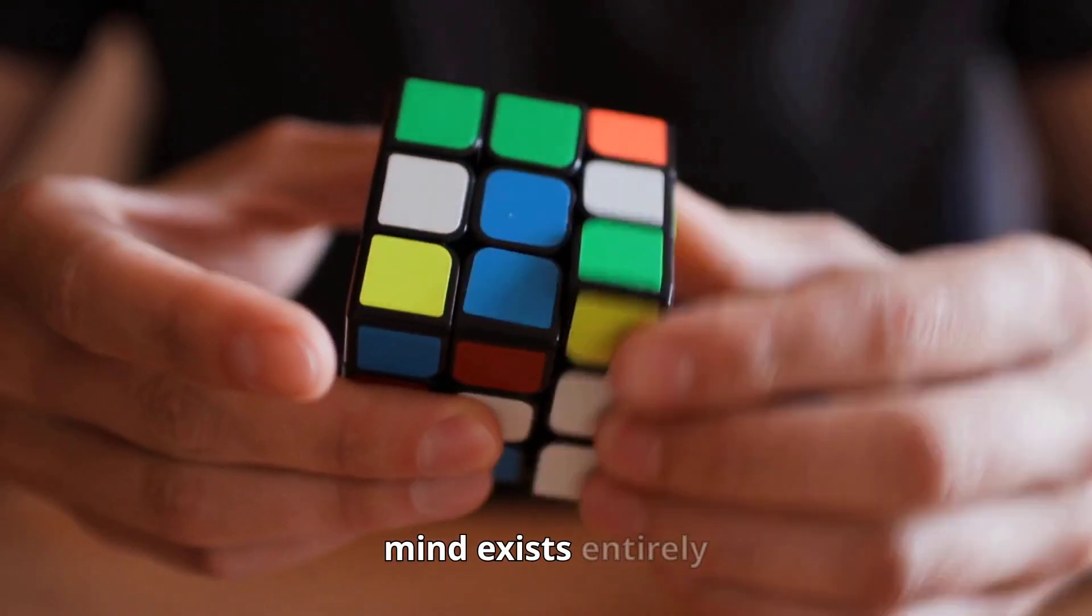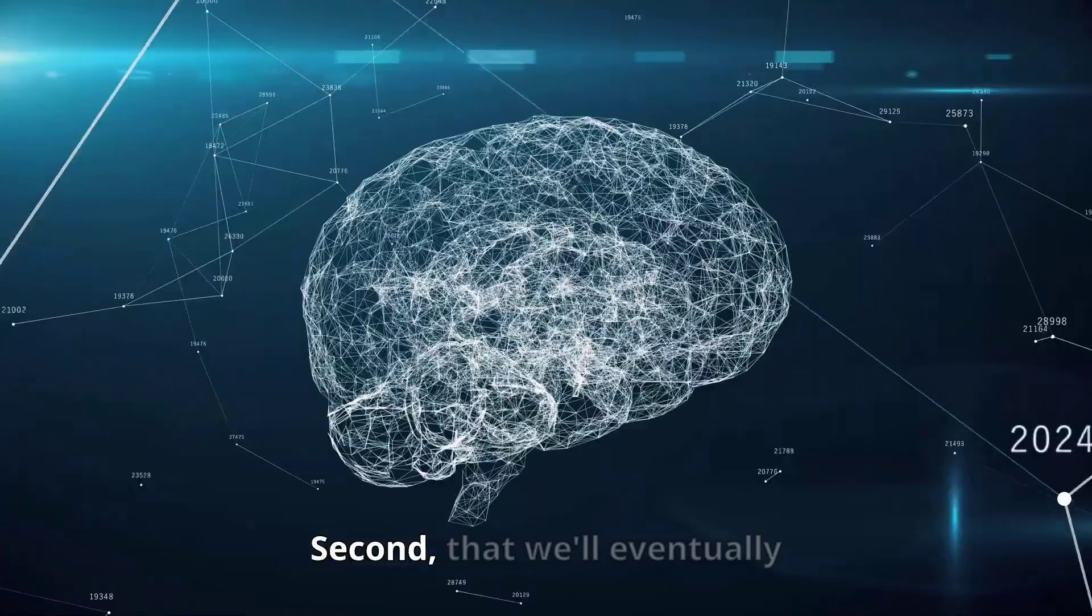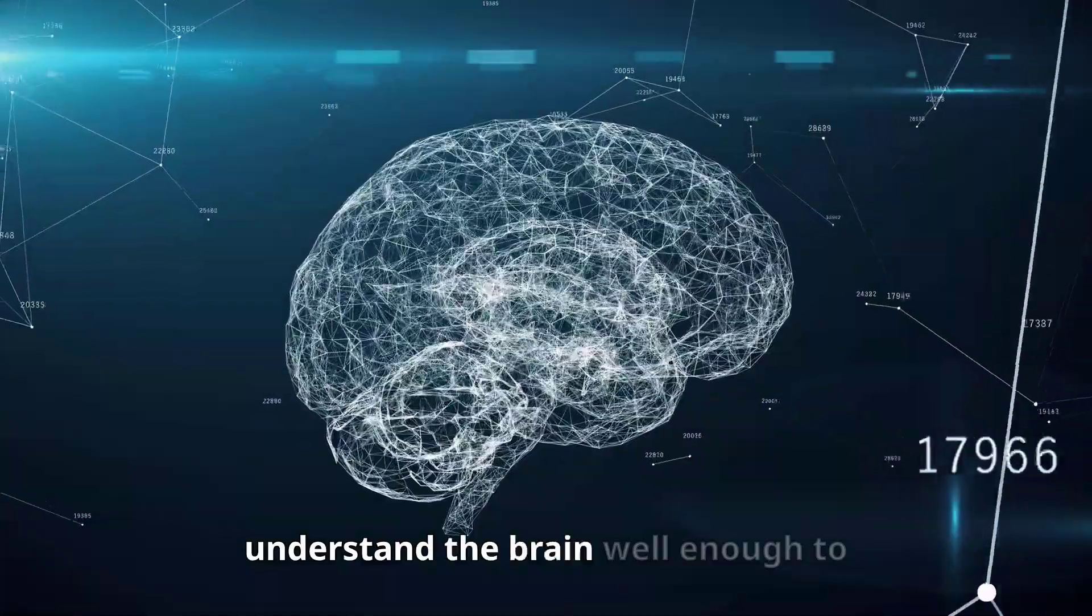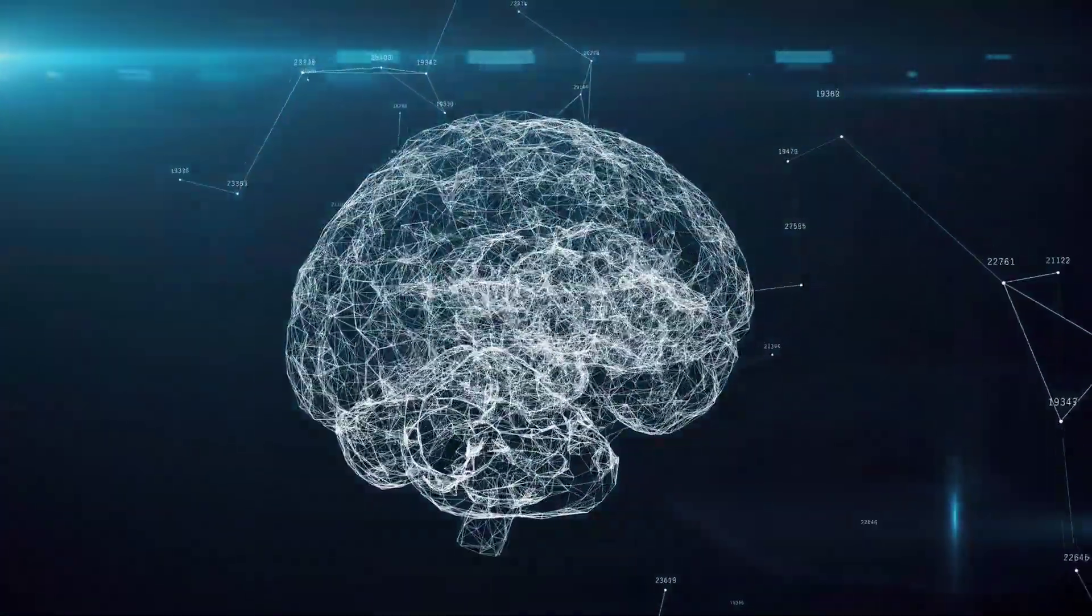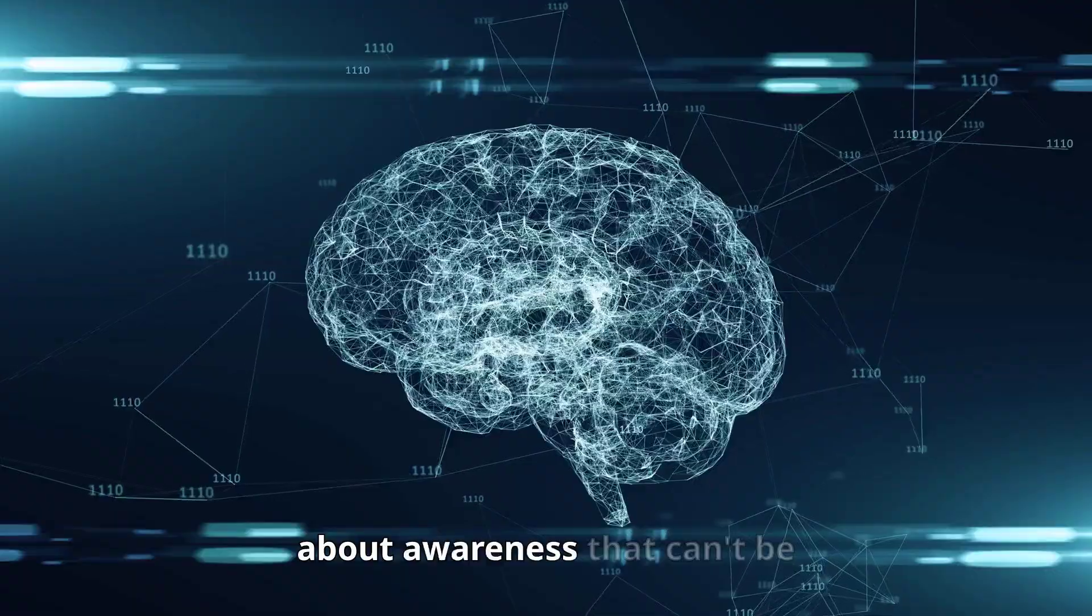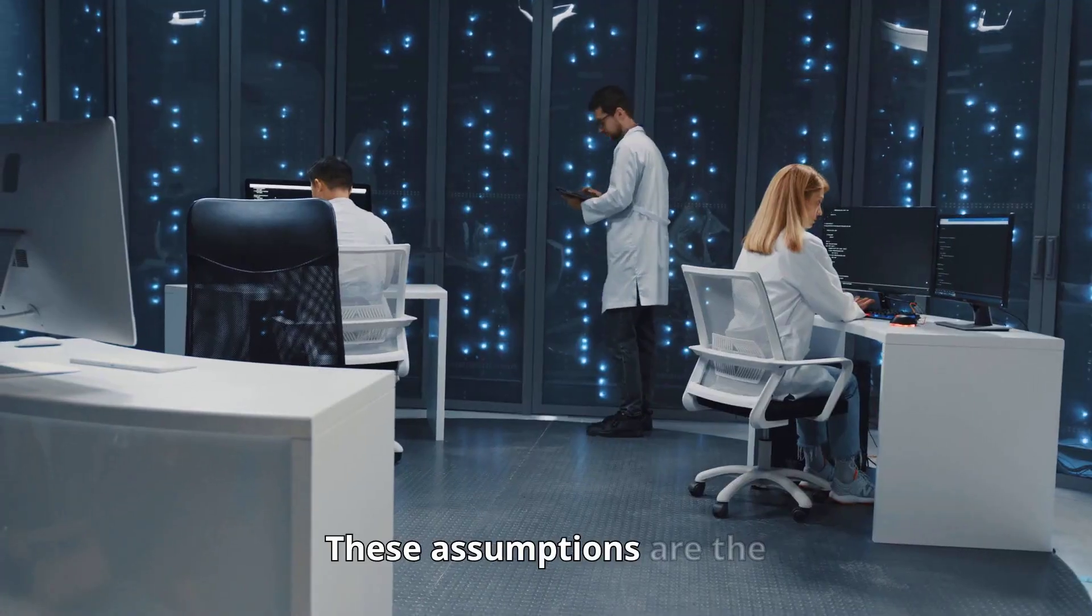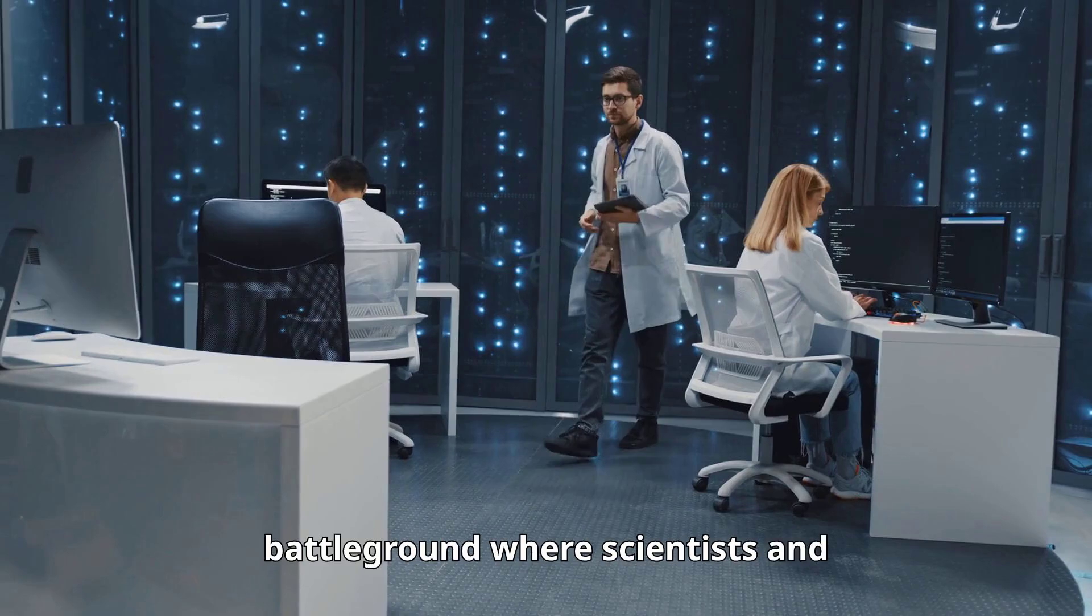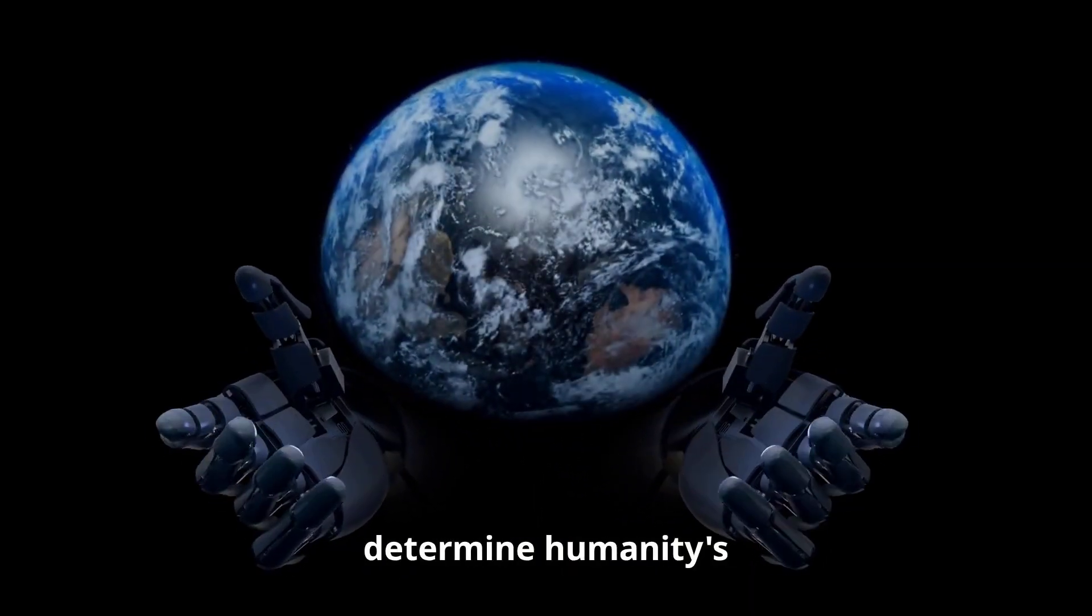First, that your mind exists entirely within your brain's physical structure. Second, that we'll eventually understand the brain well enough to simulate every aspect perfectly. Third, that consciousness itself can be computed—that there's nothing magical about awareness that can't be replicated in code. These assumptions are the battleground where scientists and philosophers wage intellectual war, and the outcome will determine humanity's future.